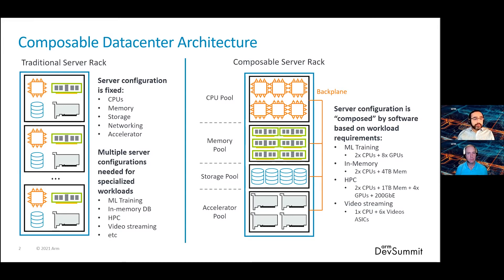When you deploy a server in a traditional architecture, you fix the number of CPUs, the amount of DRAM memory, the amount of storage per server, similarly networking and other accelerators. Each of these servers are similar or the same and are deployed as independent units. There are other kinds of servers as well, specifically for ML training, in-memory databases, high-performance computing, and video streaming. The traditional design fixed the configuration at deployment time, and there is a significant disadvantage to this architecture, specifically when operating at large scale.